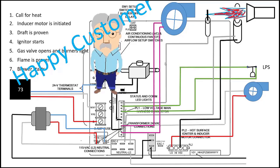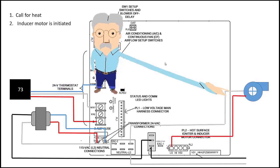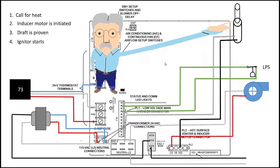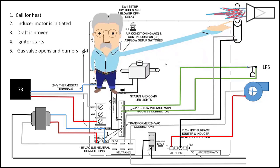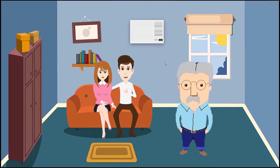That is our basic sequence of operations for a furnace. So let's quickly review. We have power to our circuit board and there's a call for heat. Our draft inducer fan starts. Draft is proven. The igniter starts. The gas valve opens and we have flame. Flame is proven. Our indoor blower starts. And we end up with a happy customer.